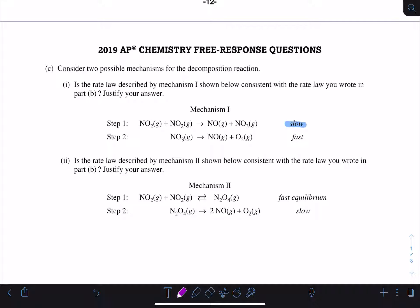What we want to do to determine if our mechanism is consistent with the rate law we wrote above is to use the mechanism to write the rate law. If they're the same, it's consistent. If they're not, it's not.